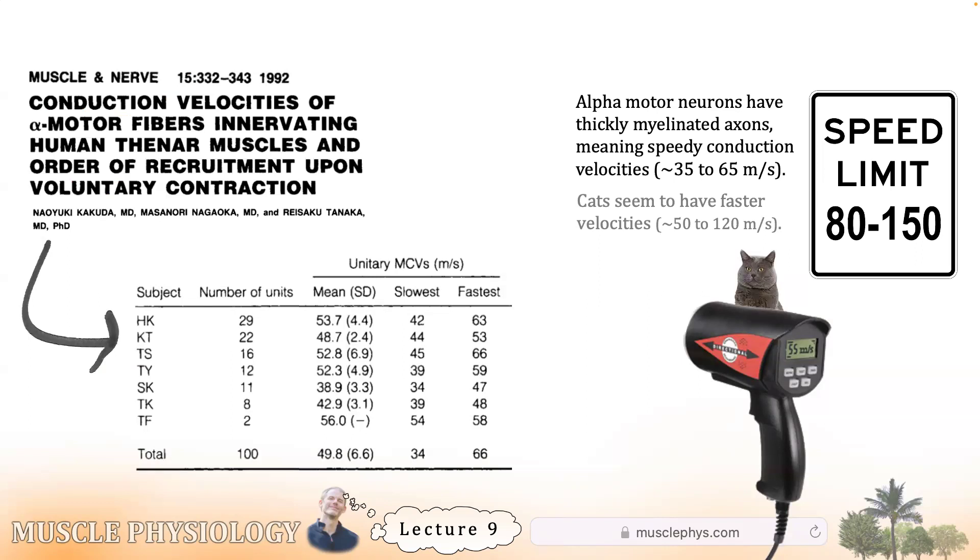As a reminder, the alpha motor neuron is a lower motor nerve that synapses in the ventral root and heads out toward the target tissue. How thickly its axon is myelinated affects its conduction velocity. In the table at the bottom, you see seven different subjects and the researchers looked at the conduction velocities of a neuron innervating the thenar muscles. The range was between 34 meters per second to 66 meters per second.